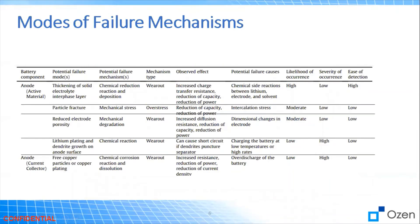What are the different failure mechanisms for lithium-ion batteries? There are different modes, including chemical, mechanical, and thermal. For the anode, which is one of the active materials, failure modes include thickening of solids, chemical reduction reactions, and depositions — this is what we call wear out. This can increase charge transfer resistance and cause reduction of capacity and power.